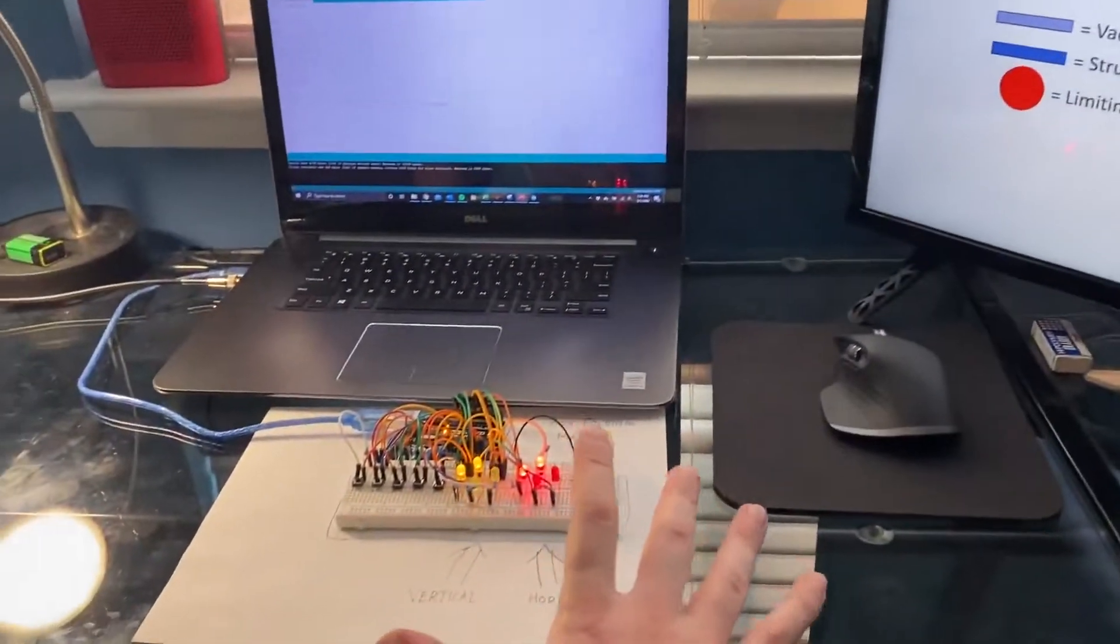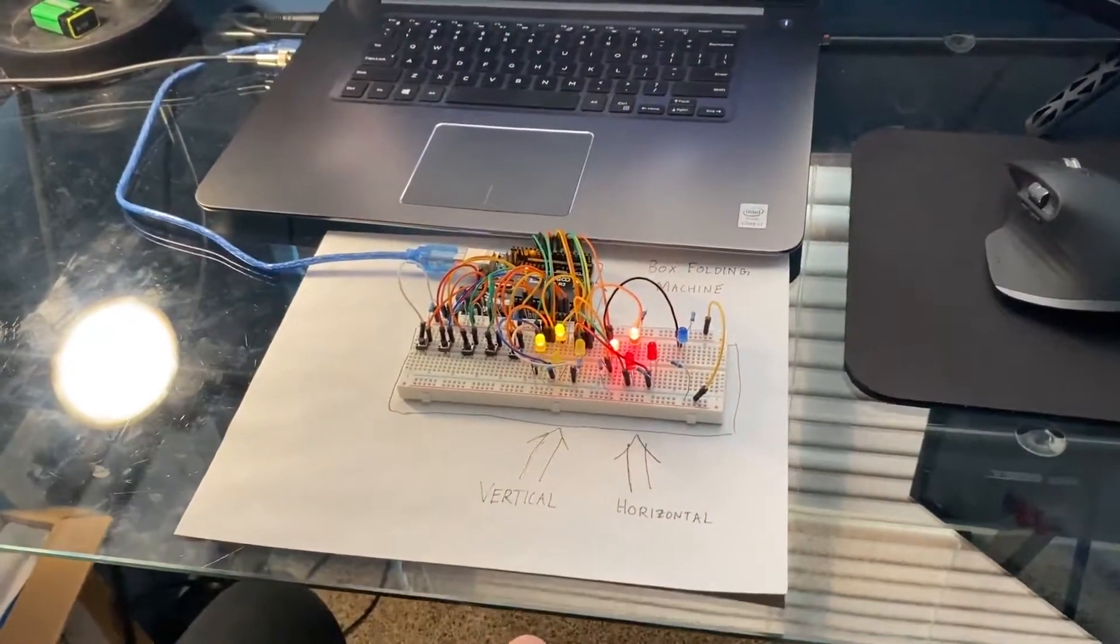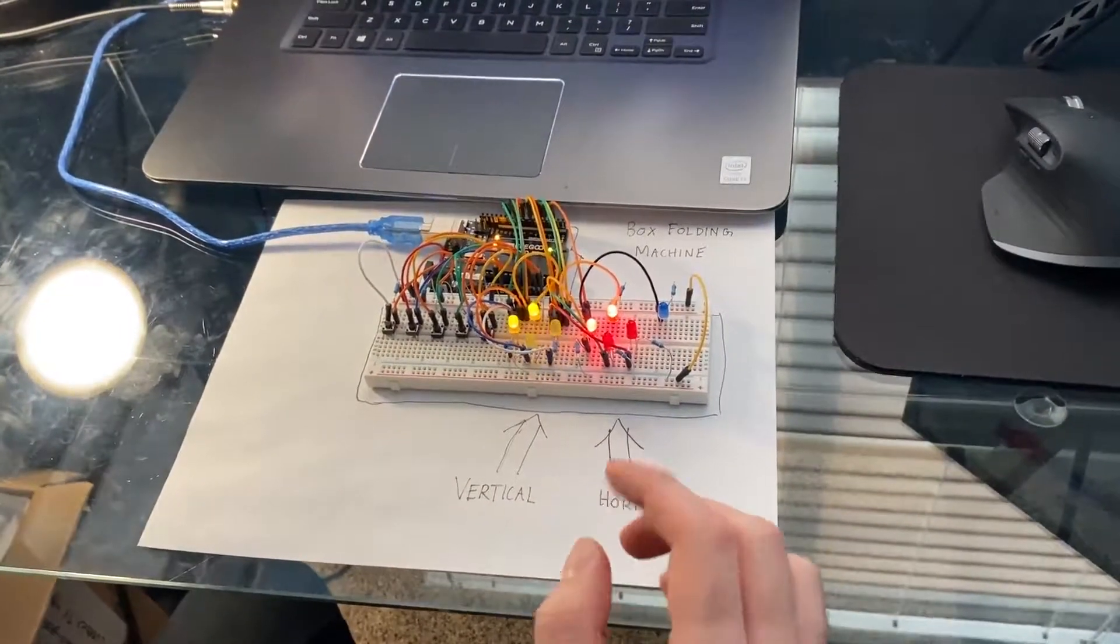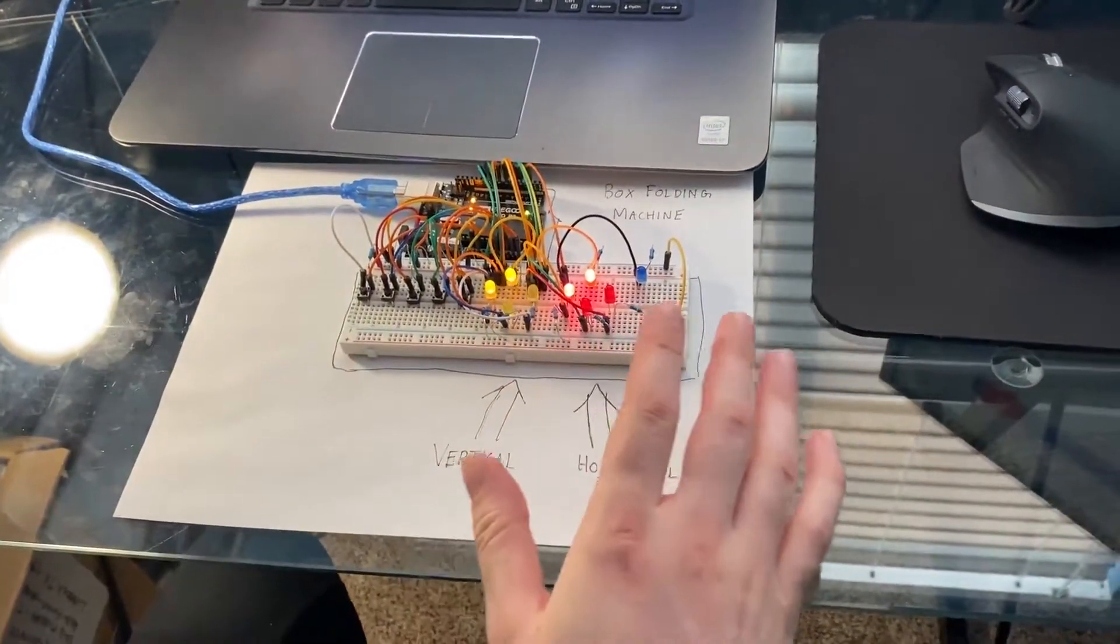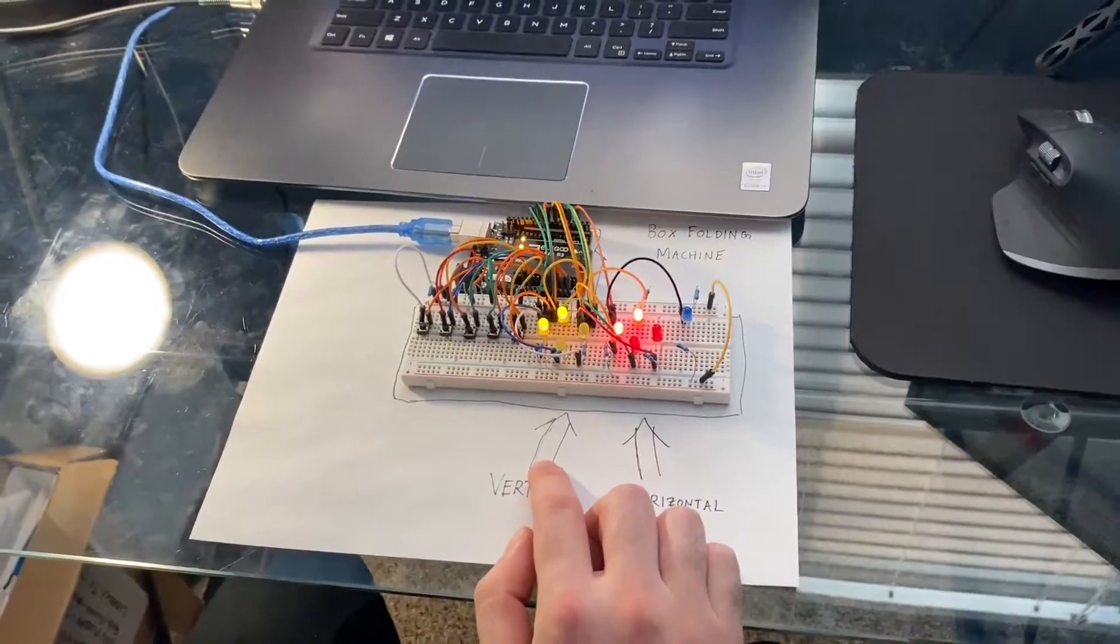While you're watching this video, maybe even pull up the diagram that you just saw so that you can kind of follow along with me. The switches are labeled, the limiting switches are labeled A through E.